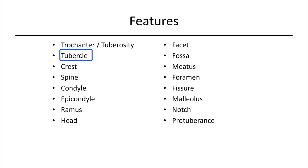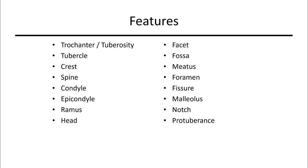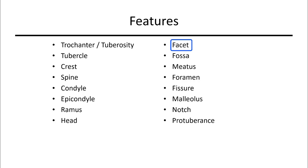A tubercle is similar but specific to the humerus. A crest is a narrow ridge, whereas a spine is a sharp, slender, or narrow process. A condyle is a rounded knob that articulates with another bone, whereas an epicondyle is a projection just superior to the condyle. A ramus is a beam of bone, whereas a head is a rounded surface, often inside a joint. A facet is a smooth, flat, concave surface, while a fossa is more of a depression or shallow area.